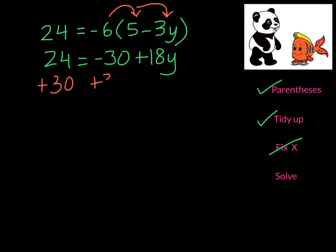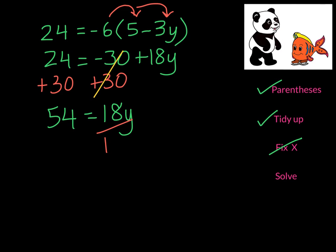So we proceed to solve. We add 30 on both sides. On the left-hand side we get 54. On the right-hand side we get 18y. Now we need to divide by 18 on both sides, and 1y will be 3.